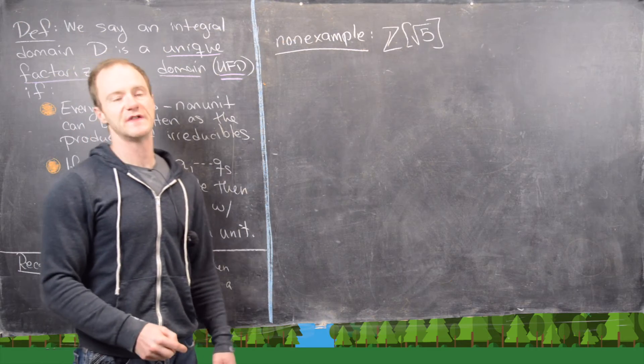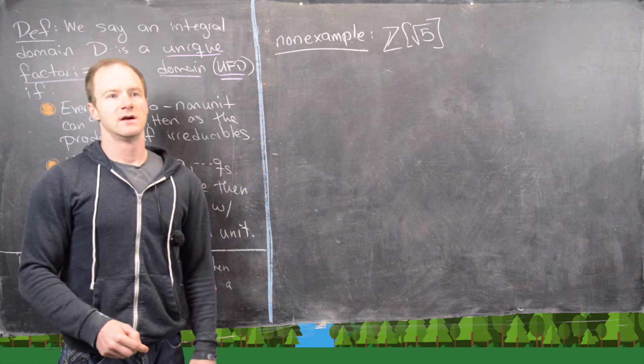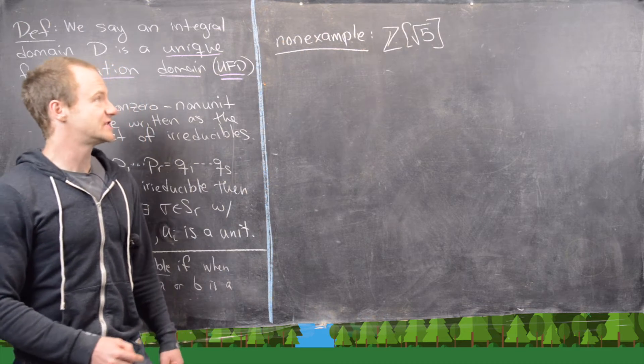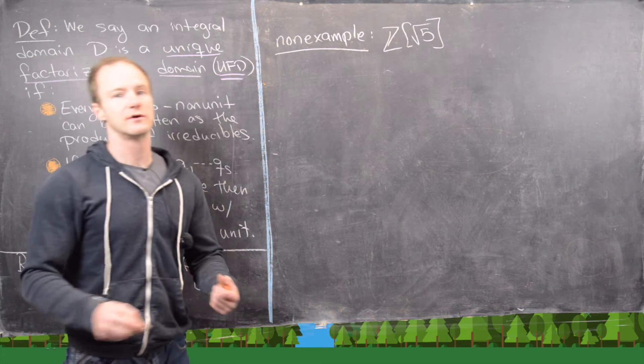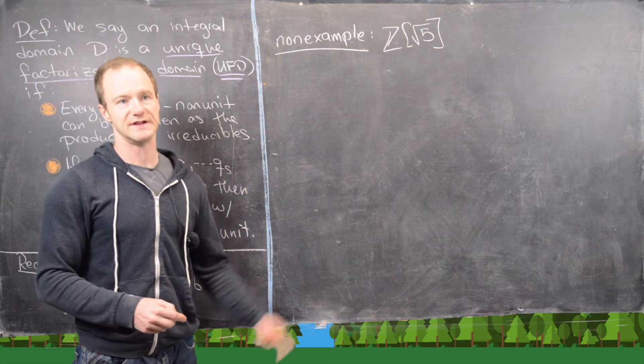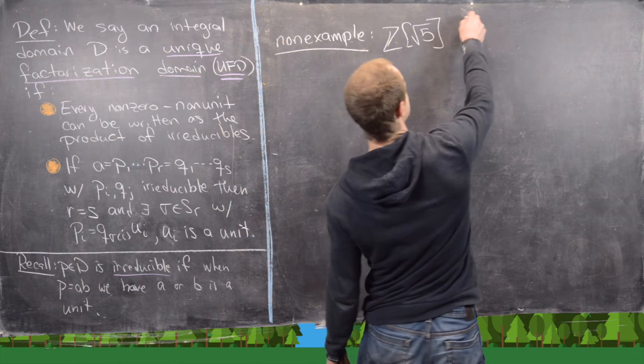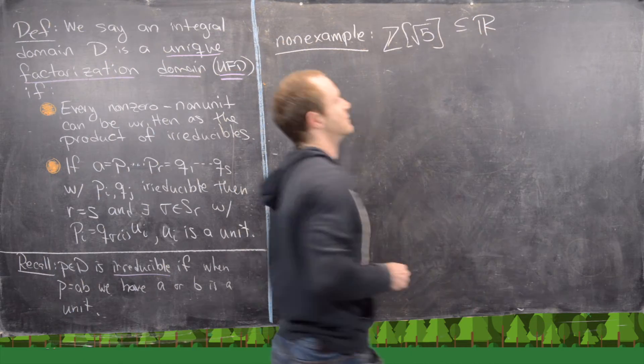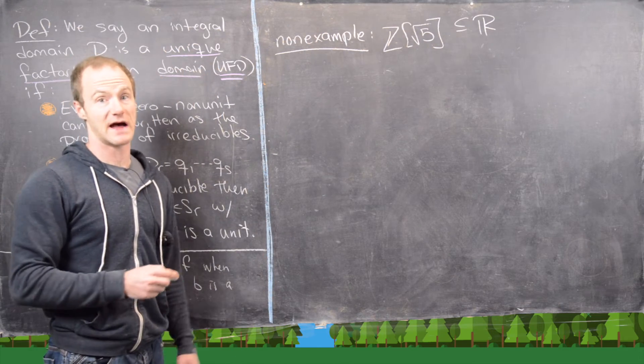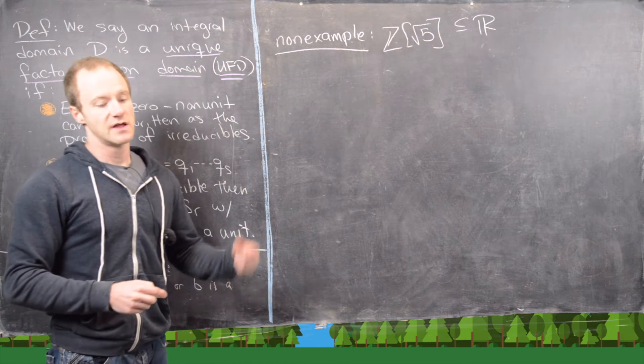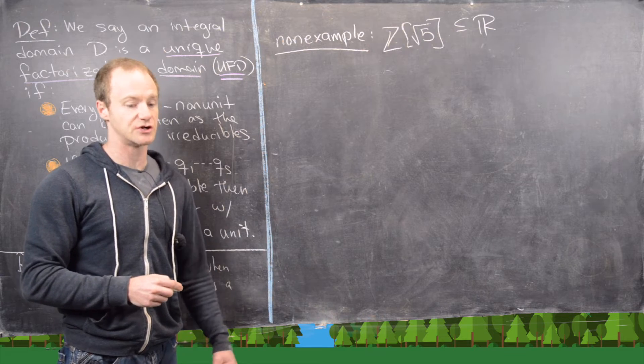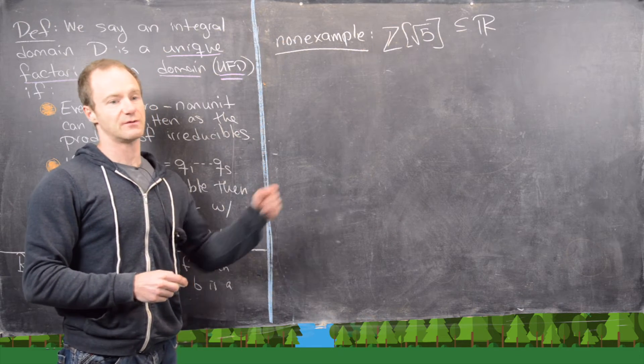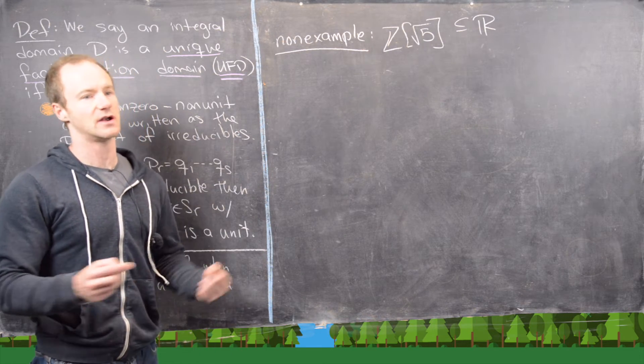So we just showed that Z adjoin I root 3 was not a UFD. And now we're going to show that the integers adjoin just the square root of 5 is also not a UFD. So notice that this sits as a subring of the real number. So we don't have anything imaginary in this case.